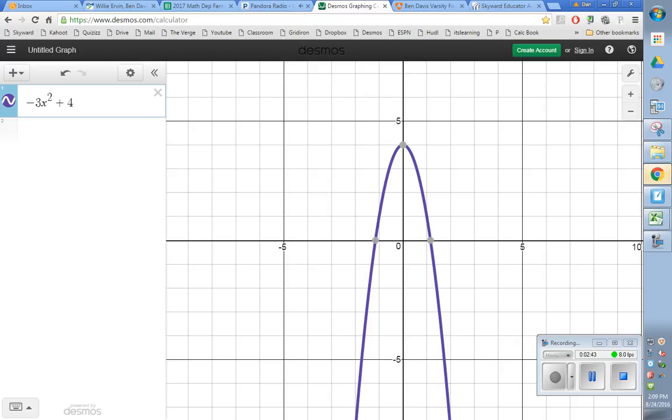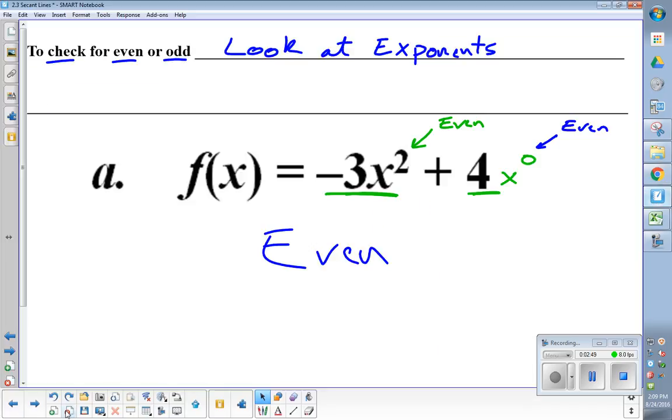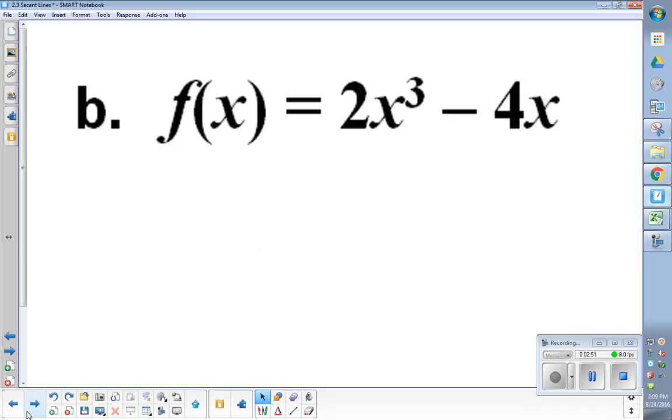I didn't look at the function, but by just looking at the equation, I could make that decision. Let's do the next one. Letter B. 2x cubed minus 4x. Looking at this first part right here, there's two parts. 2x cubed. My exponent is 3. When you think of 3, do you think even or odd? Odd.